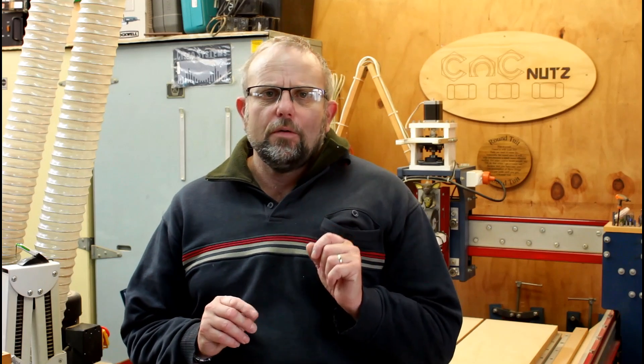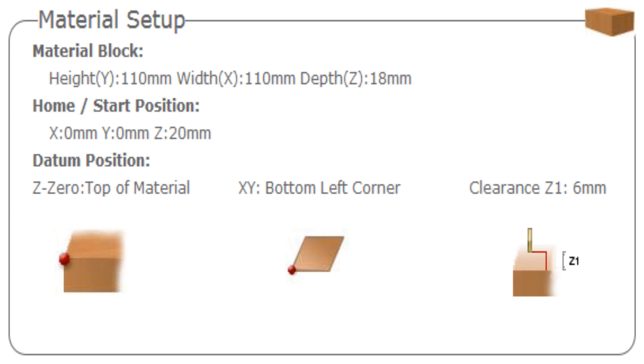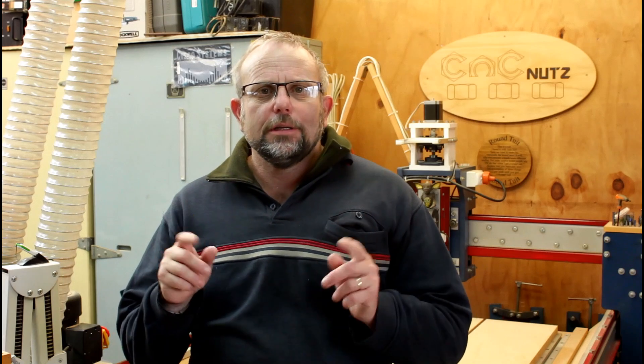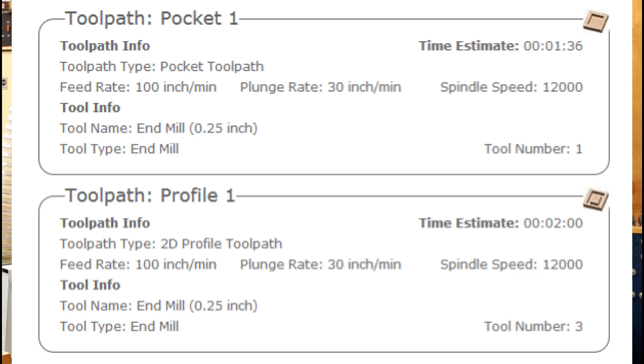There are a few provisos to this. When creating the file, you reference the cutter to the top of the material — you're probably doing that anyway, so no problem there. Second, when changing between the pocket and the profile cut, you need to make sure you change the cutter number. That forces Mach3 or UCCNC to stop and request a tool change, at which time you can re-zero the cutter as necessary. You need to make sure your settings are correct in Mach3 or UCCNC to make this happen.